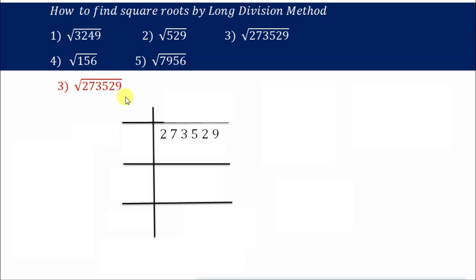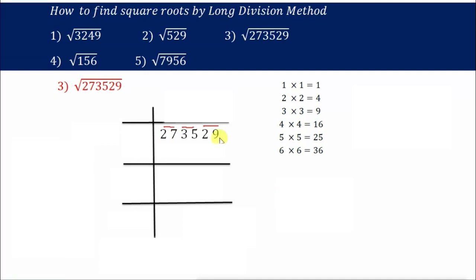Third one: 273529. Write it under the division line and start pairing from the right-hand side — first pair, second pair, and third pair, so we have three pairs. The first number is 27. We check which perfect square is nearest to or equal to 27. There is no 27, but 25 is nearest. We cannot take 36 because it is larger than 27. So we take 5×5=25.